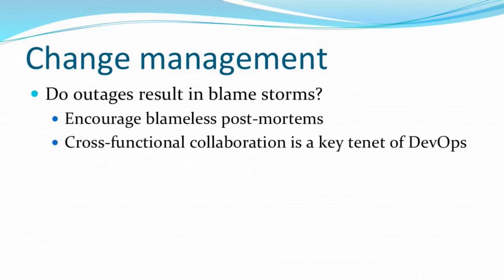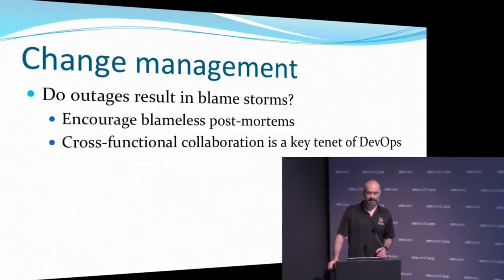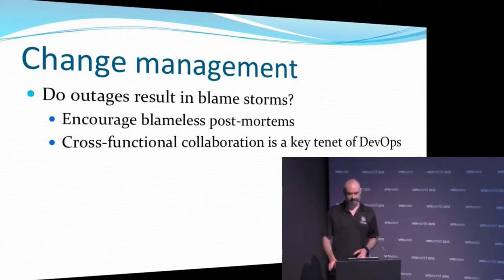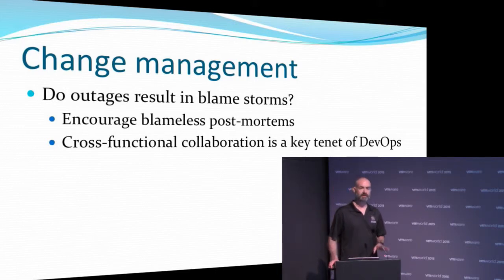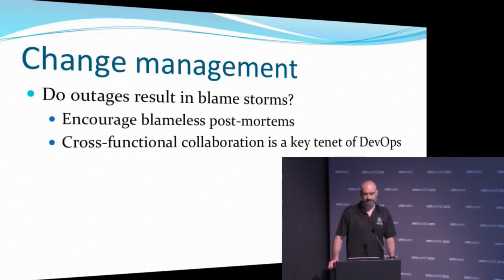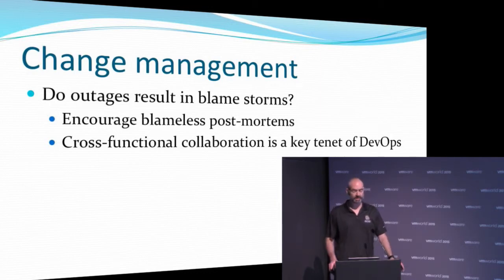Once we do get into outages, I'm sure we've all been part of it. This tends to happen within siloed organizations where you end up getting into a blame storm. A key tenet of DevOps — just like those four pillars — is cross-functional collaboration. Those four pillars all have to hold their weight and work together. If one of them is weak, you have a serious issue. What we encourage within DevOps culture and processes is blameless postmortems.